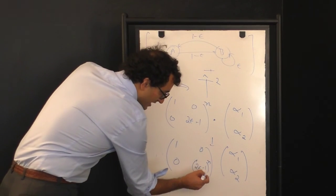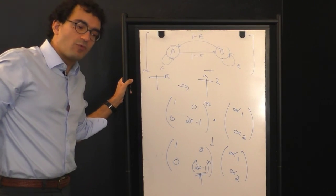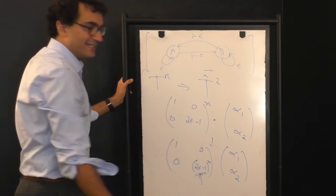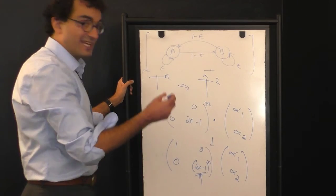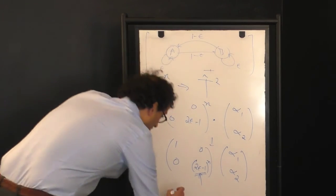As n gets very large, this term here, because it is less than 1 in absolute value, will continue to get smaller and smaller. So for example, let's take the simple case where epsilon is equal to, let's say, 1 quarter.